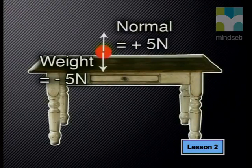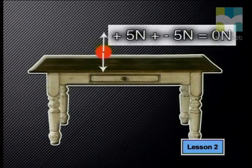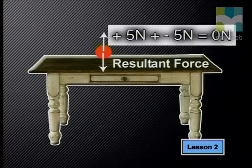Here is the free body diagram of the book on the table. The weight acts down with a force of 5 Newtons. The normal force of the table on the book is also 5 Newtons but upwards. I can show this direction using a sign — let up be positive and down be negative. When I add the forces together: plus 5 Newtons plus minus 5 Newtons, this gives me an answer of 0 Newtons. We call the sum of all the forces acting on the body or object the resultant force.